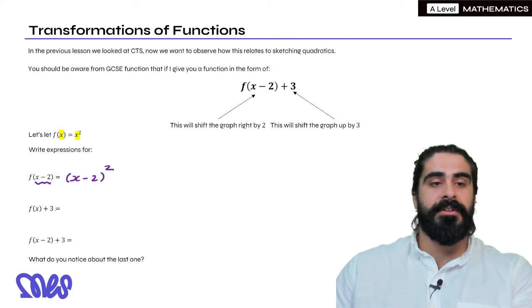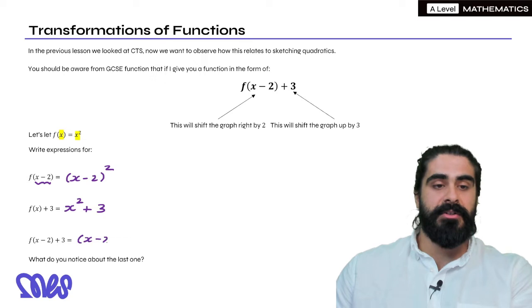f(x)+3: Now f(x) is just x² so we get x²+3. And finally we have f(x-2)+3. We wrote down that f(x-2) is (x-2)² and then we have the +3 at the end.